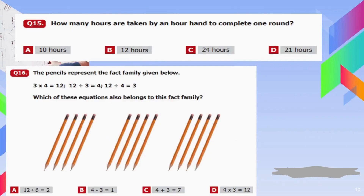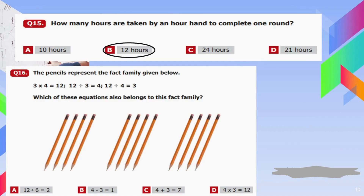Question number fifteen: How many hours does it take the hour hand to complete one round? One round of a clock is completed in 12 hours, so in 24 hours there are two rounds of the hour hand. B is our answer.